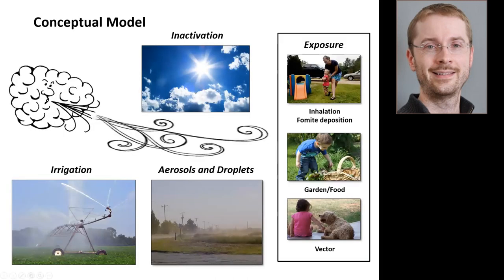Here's a conceptual model. When irrigating with manure, the majority of the material ends up on the ground as designed — that application area is called the wetted perimeter. But if the wind is blowing, a small fraction gets blown away from the wetted perimeter in the form of aerosols or droplets and eventually reaches people downwind — potential hosts that could ingest the pathogens in those aerosols and droplets and become sick.